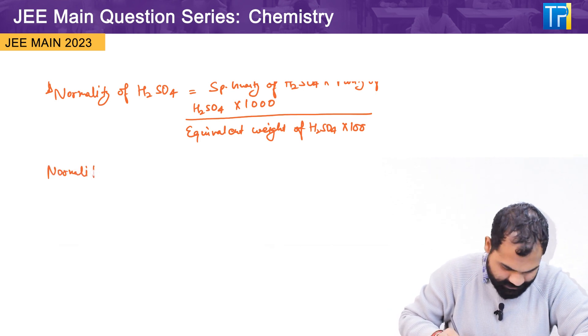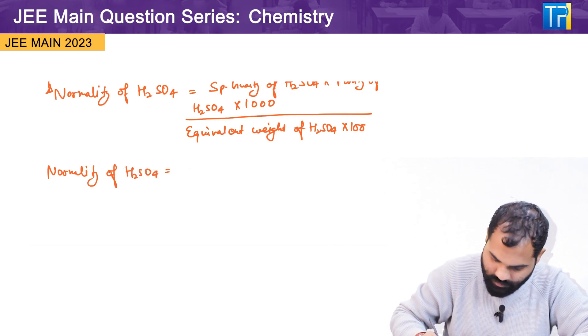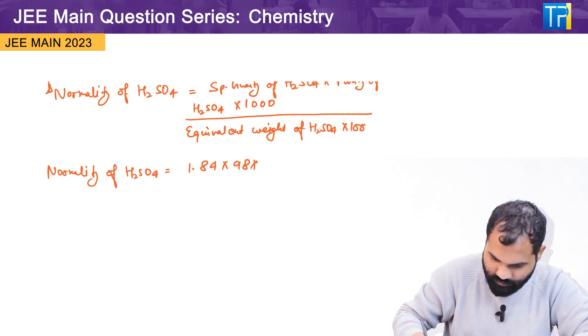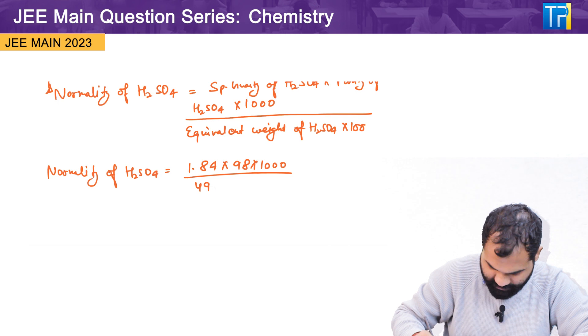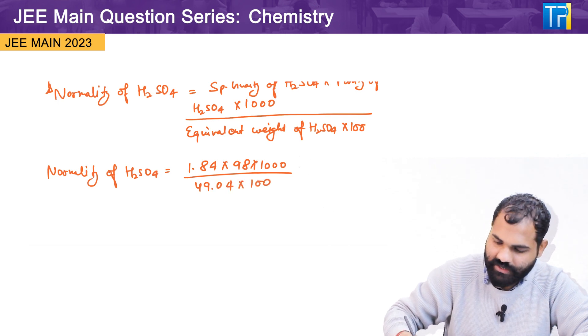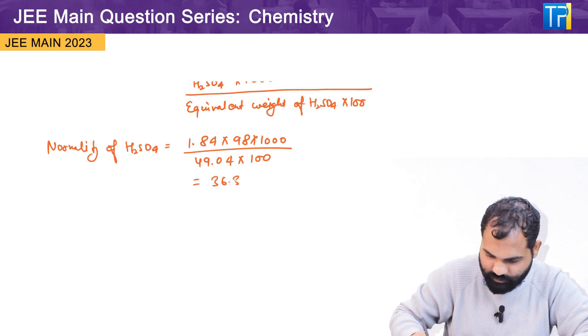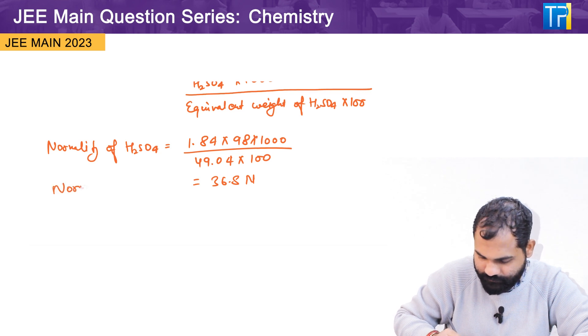The normality of H2SO4 is 1.84 into 98 into 1000 upon 49.04 into 100. And if we solve this further, then we have the value is 36.8 N. So this is the normality of H2SO4.